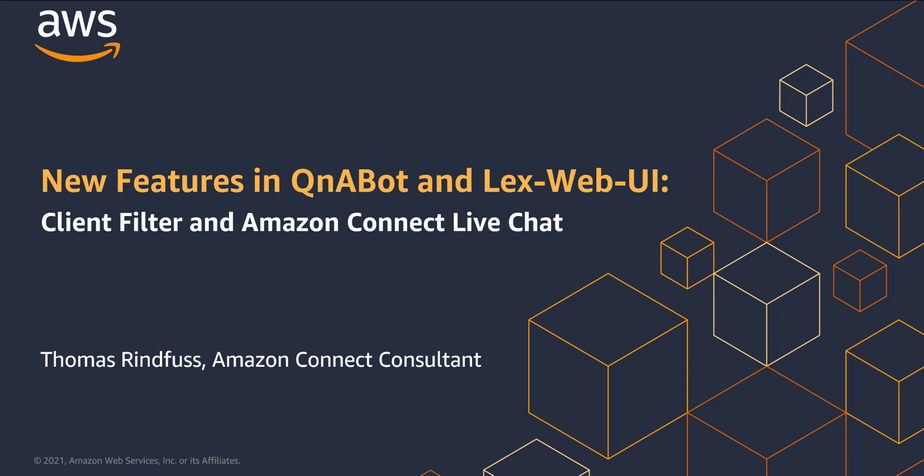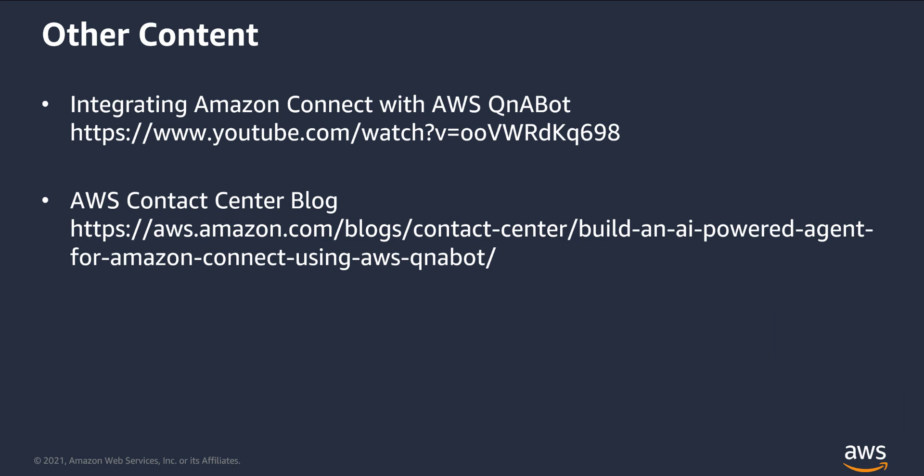For example, in my demo today, I'll talk about a fictitious university. Each department at the university has frequently asked questions. By sending in the department name as a client filter value, we make sure that the correct response is returned for each department. In an earlier video and blog post, I've introduced Q&A Bot and demonstrated how to integrate Amazon Connect with Q&A Bot. If you haven't seen that video before, you might want to view that first. I've put the links to the video and the blog post in the description below.